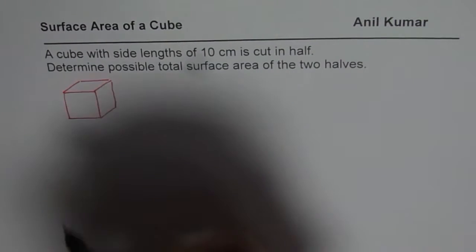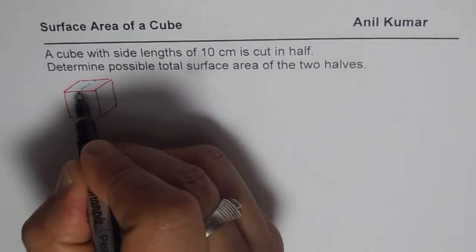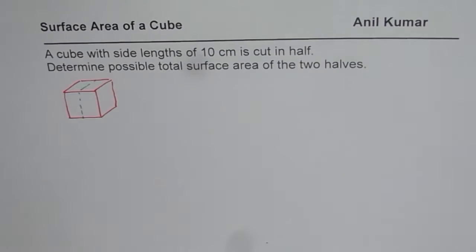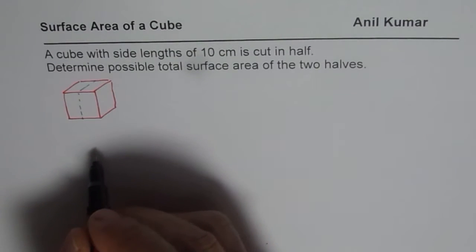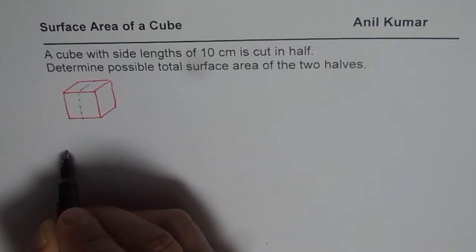Now if I cut it, let us say from here, cut it open like this, then what happens? In that case I get two rectangular prisms. So I get two rectangular prisms.